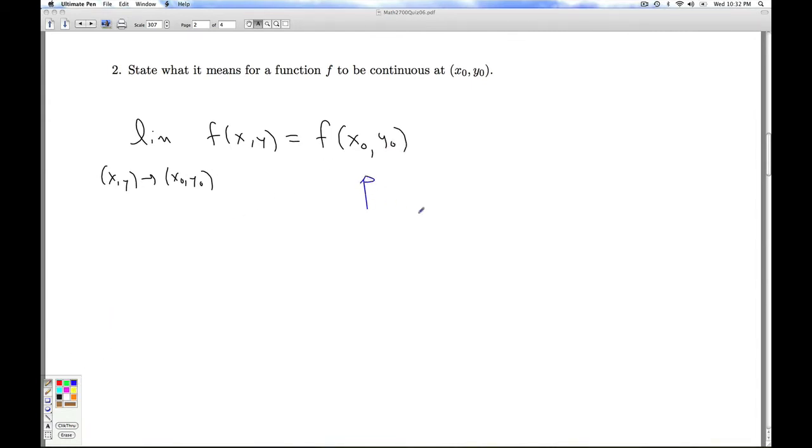So actually plugging in the point x naught y naught is the algebra concept of what's happening actually at the point. The limit as x y gets close to x naught y naught is the calculus concept what's happening near the point. So continuity is what bridges the gap between pre-calculus and calculus. You get at the point exactly what you expect to get at the point. And so that'll do it for number two.